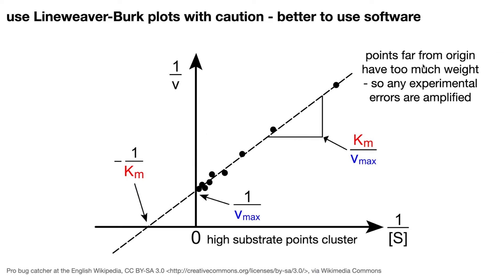In the olden days, before sophisticated nonlinear regression tools, there was this thing called the Lineweaver-Burk plot. Instead of plotting substrate against velocity, you plot 1/substrate against 1/velocity — this gives you a line where the x-intercept is -1/Km and the y-intercept is 1/Vmax. The problem is that points far from the origin — corresponding to very small amounts of substrate — become large numbers on the graph and act like a lever pulling your curve. They can have a big impact and are often sources of large error.